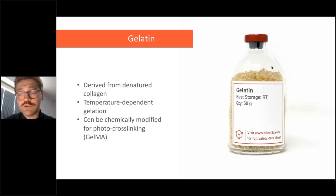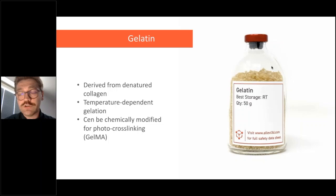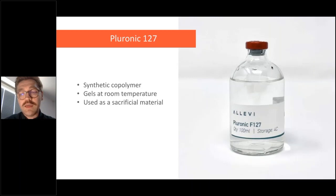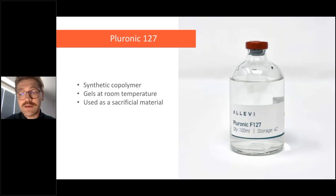The last synthetic bio-ink I want to mention is Pluronic F-127, a synthetic polymer with temperature-dependent gelation. At room temperature it forms a gel, but it can be liquefied again at 4°C. This property gives us the opportunity to pattern channels in blood vessels using a set of different techniques.